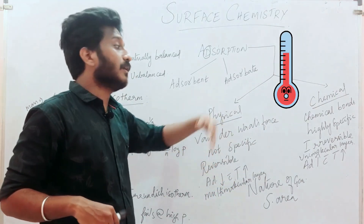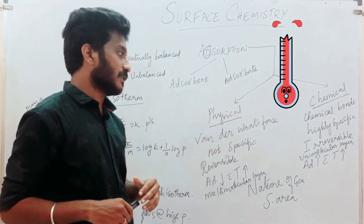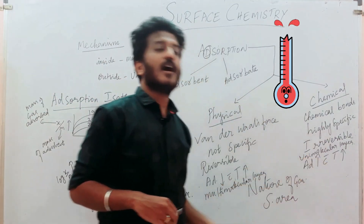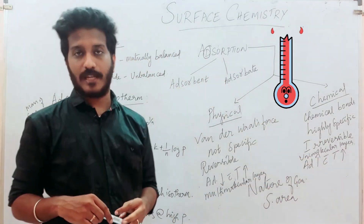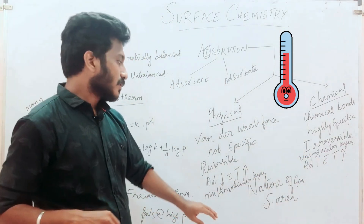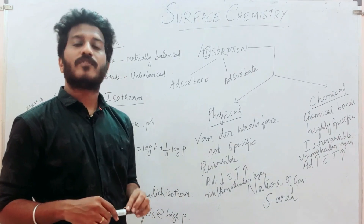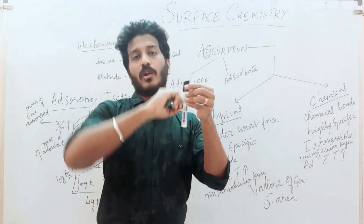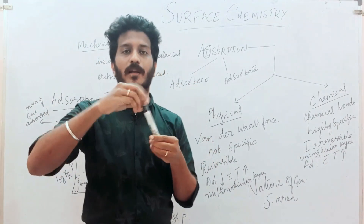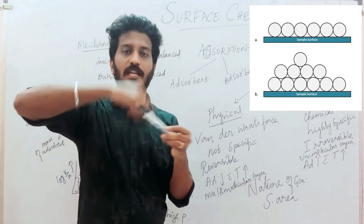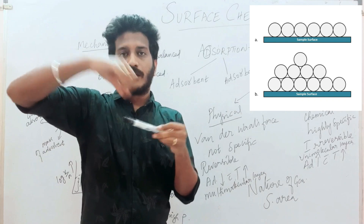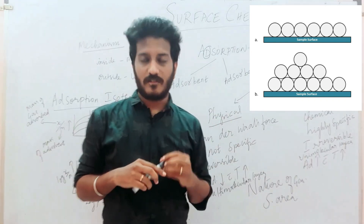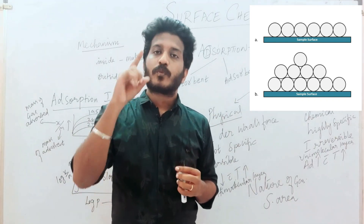Physical and chemical adsorption are opposite in behavior. When temperature increases, physical adsorption decreases, while absorption increases. In physical adsorption, multi-molecular layers are formed — that means more than one layer will be formed. In chemical adsorption, only a single molecular layer is formed.